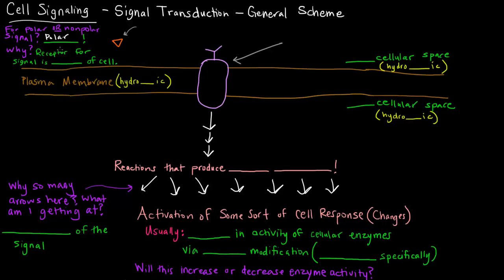The reason why is because when we think about signal transduction, the signal that's going to bind the receptor of a cell is going to be a polar signal. And because it's polar that means it's going to bind a receptor on the cell surface. So the receptor is on the outside of the cell.